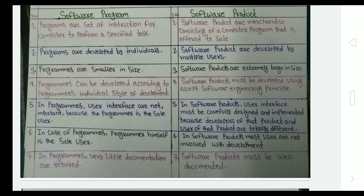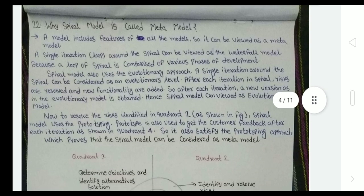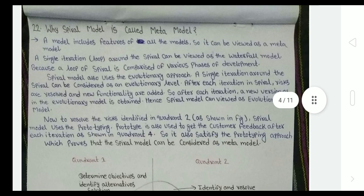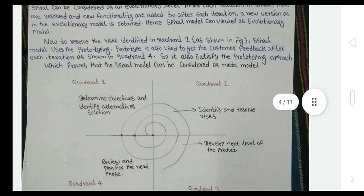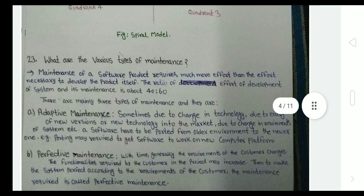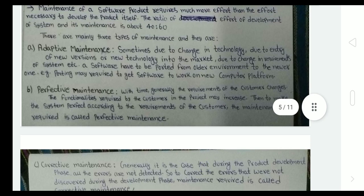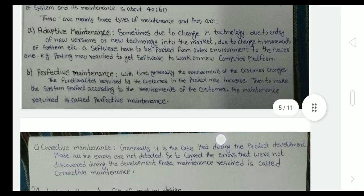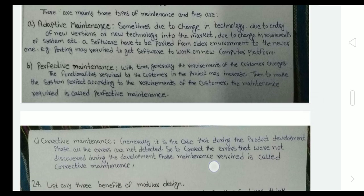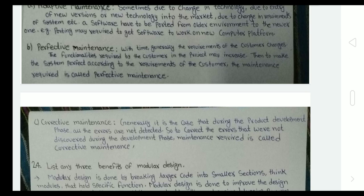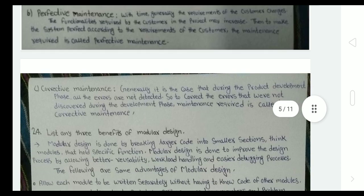Why is spiral model called meta model? As we all know, it contains all the characteristics of other models like waterfall, iterative, evolutionary. So therefore this is known as the meta model. You can write this much. Here you can see the answer and the diagram. There are three types of maintenance: adaptive maintenance, perfective maintenance, and corrective maintenance. Adaptive maintenance is due to change in technology, while perfective maintenance is done for requirement of future, and corrective maintenance is done when errors are not found in the development time.